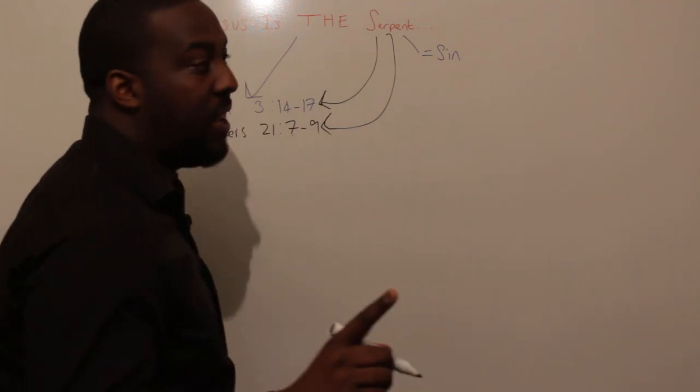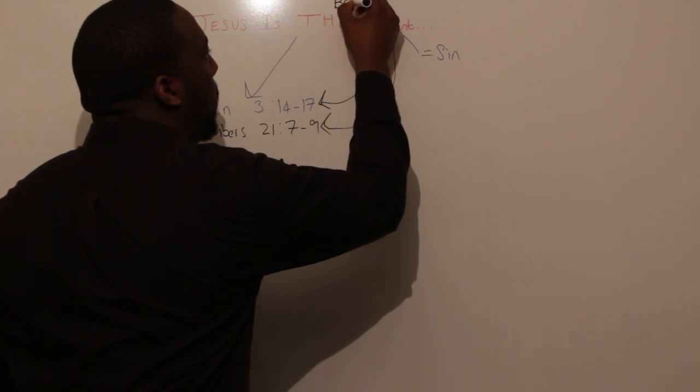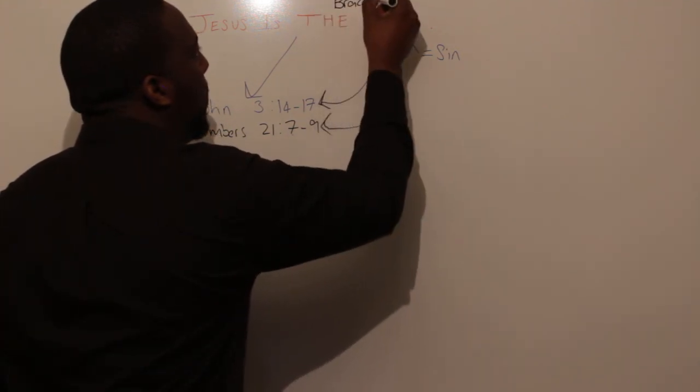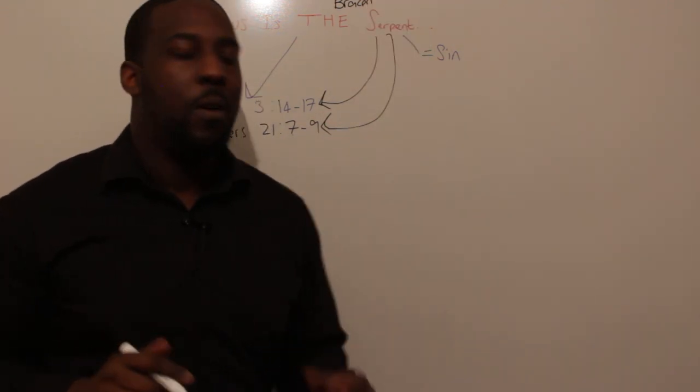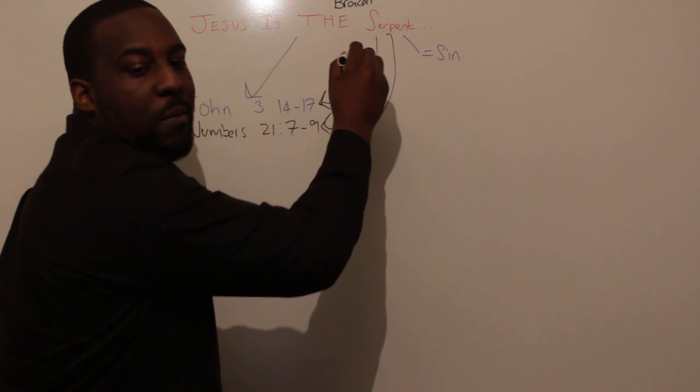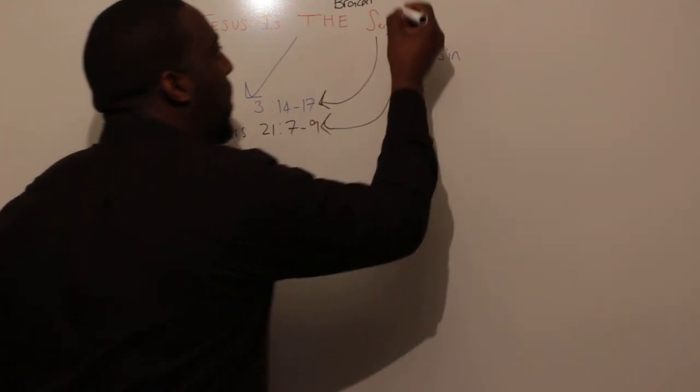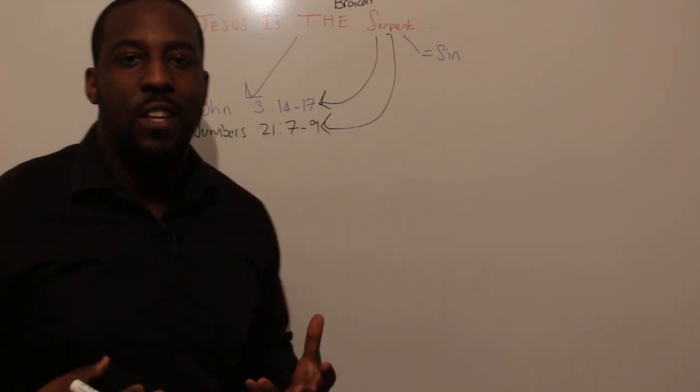But what did he say? He was the brazen serpent. Why is this so special? Because yes, generally the serpent is a symbol of sin, but the brazen serpent—what is brass, brazen, what is that generally referenced as in the scriptures?